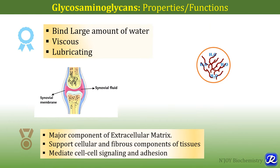Let us see some important properties and functions of glycosaminoglycans. These glycosaminoglycans exist as proteoglycans, which are the major component of extracellular matrix, supporting cellular and fibrous components of tissues and mediating cell-to-cell signaling and adhesion. They are negatively charged due to the presence of carboxyl and sulfate groups, and because of this negative charge, they bind to positively charged ions and form hydrogen bonds with water molecules, thereby producing a gel-like matrix. This gel provides flexible mechanical support and functions as a cushion and lubricant against mechanical shock. It binds large amounts of water and is viscous and lubricating.